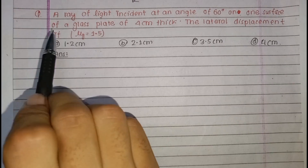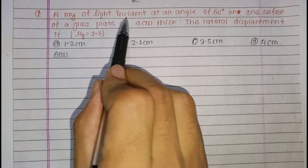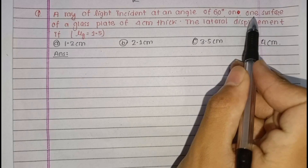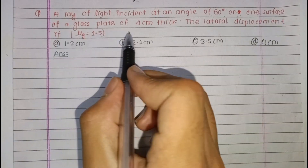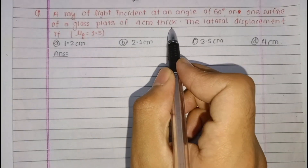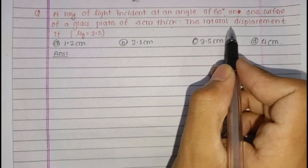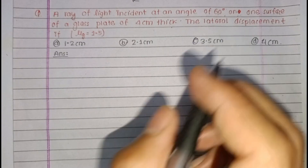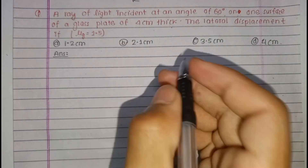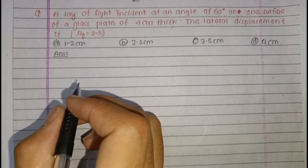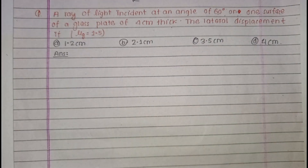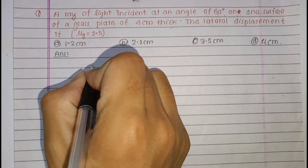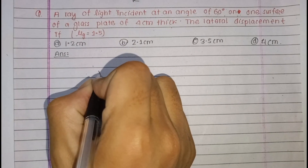A ray of light is incident at an angle of 60 degrees on one surface of a glass plate of 4 cm thick. This gives us the lateral displacement. The lateral shift is calculated from this setup.